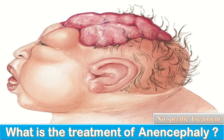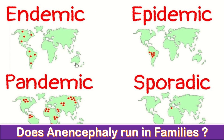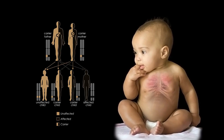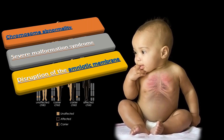Does anencephaly run in families? Most cases of anencephaly are sporadic, which means they occur in people with no family history of the disorder. A small percentage of cases have been reported to run in families. However, the condition does not have a clear pattern of inheritance. In some cases, it may be associated with a chromosomal abnormality, a severe malformation syndrome, or disruption of the amniotic membrane.